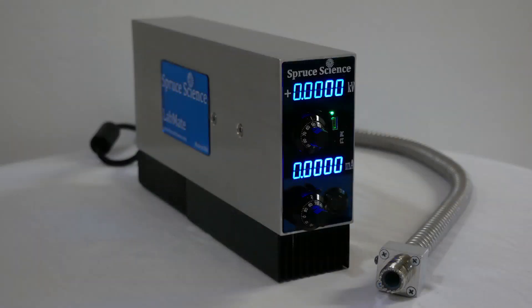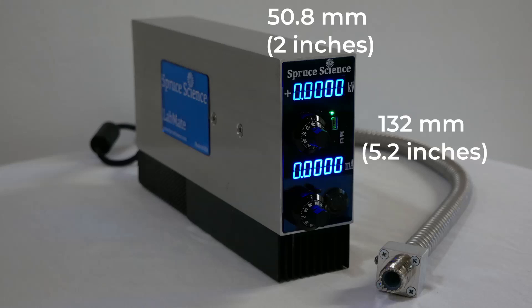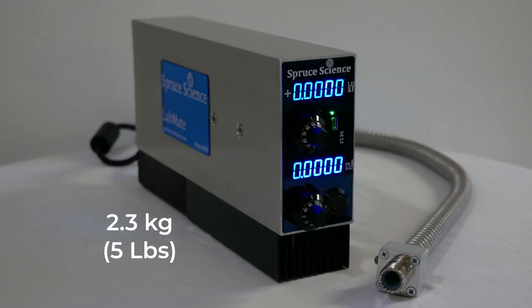The dimensions for the compact power supply are width 50.8mm, height 132mm, depth 286mm. It is lightweight at 2.3kg.